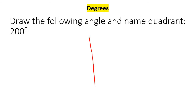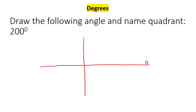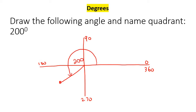Now we're going to draw a 200 degree angle. So we're going from zero. Remember this is 90, 180, 270, 360. So where would 200 be? Well, 200 would be somewhere in this quadrant — so let's say there. Draw a little line, and then you can just show a little angle like that. And then this angle is 200 degrees. Once again, this is the initial, and then this is the terminal.